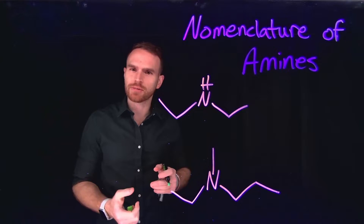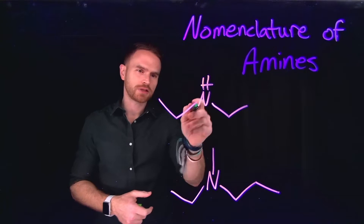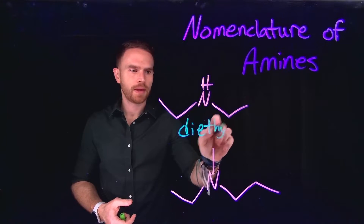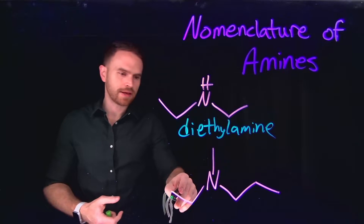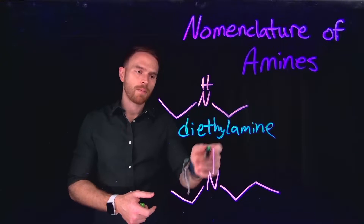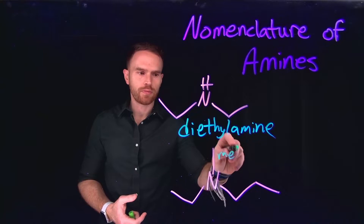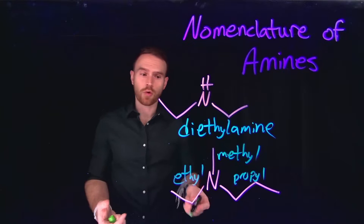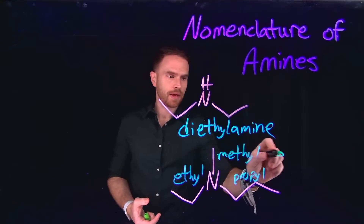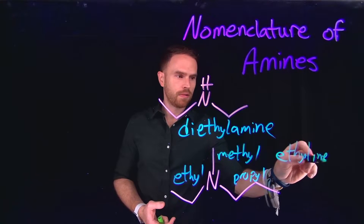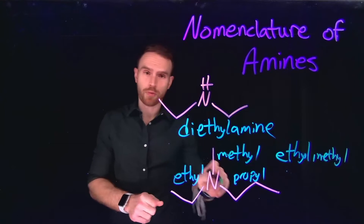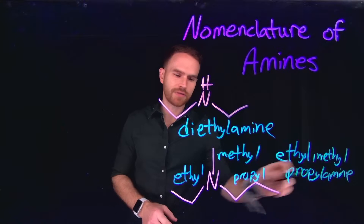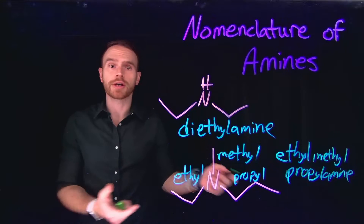Secondary and tertiary amines are named very similarly to how primary amines are named. In the first example, I see two different ethyl substituents coming off of the amine group, so I would call this diethylamine. And then in the final example, we see a tertiary amine where all three substituents are different: a methyl group, an ethyl group, and a propyl group. I need to place these in alphabetical order — ethyl, methyl, propyl — giving us ethylmethylpropylamine. Additionally, if these were more complex alkyl chains, we would still use the alkanamine nomenclature.